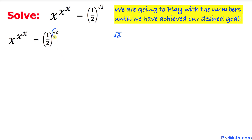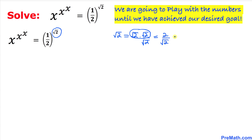Let's focus on this exponent: square root of 2. I have copied it down right up here and I am going to manipulate it a little bit. I can write square root of 2 as square root of 2 times square root of 2, divided by square root of 2 — that doesn't make any difference because this is the same as 1. Now let's multiply the top: square root of 2 times square root of 2 is 2, divided by square root of 2.